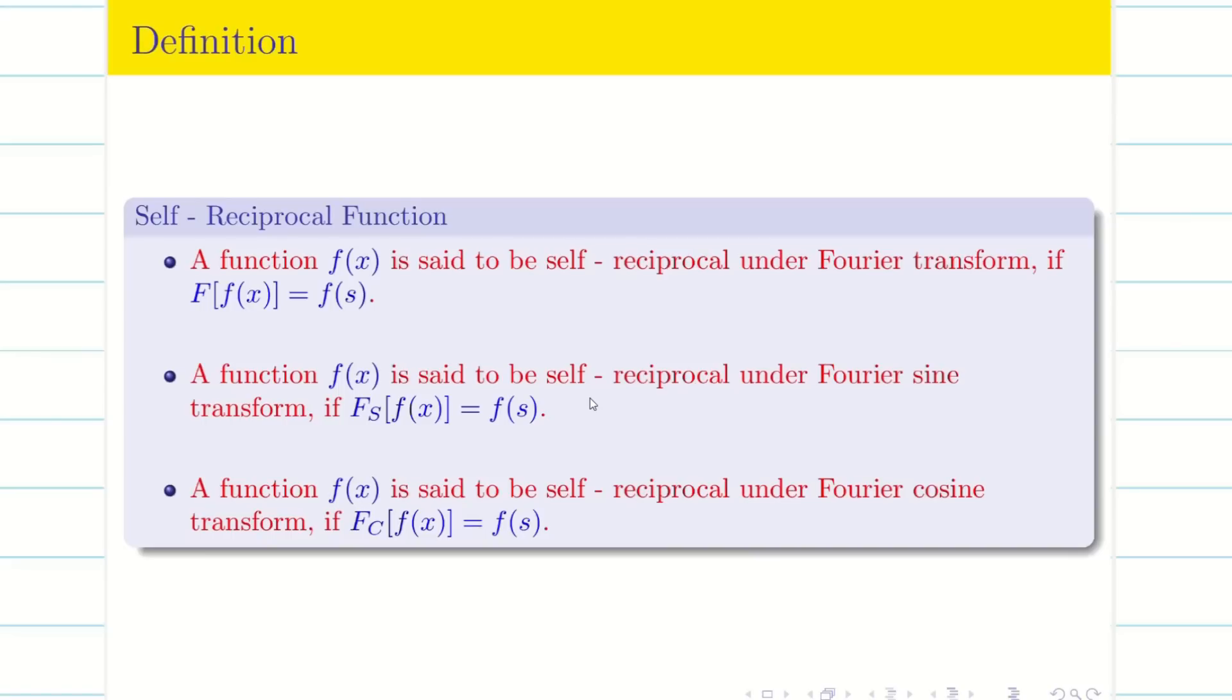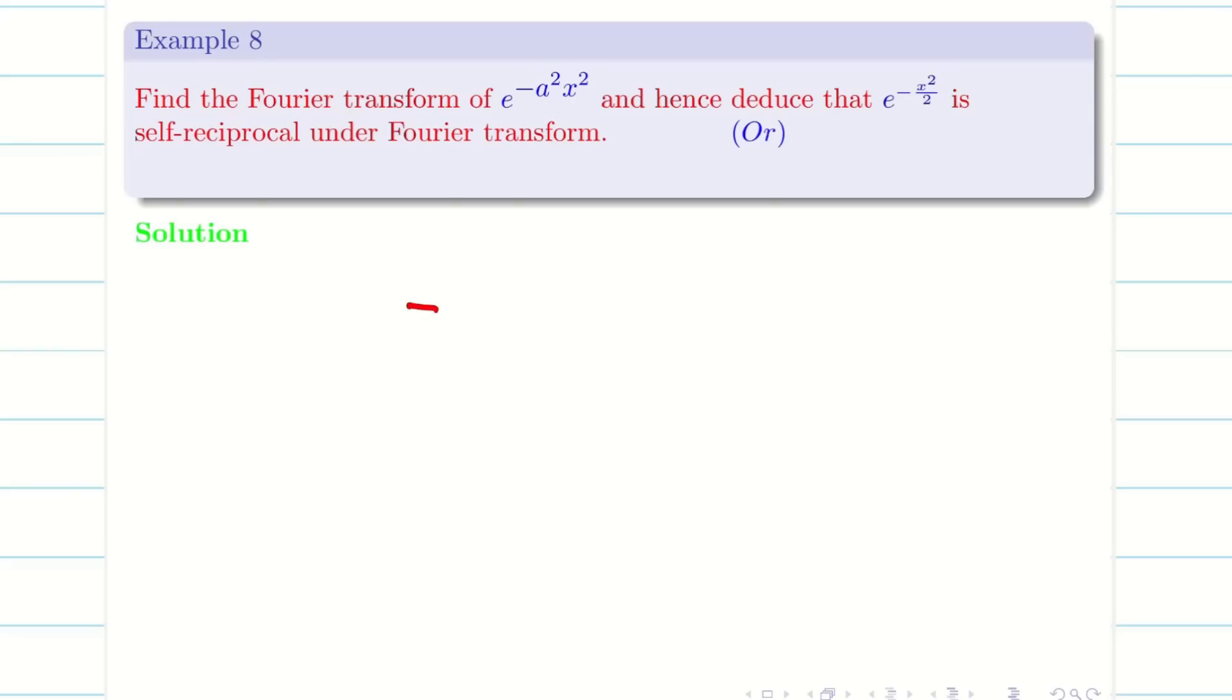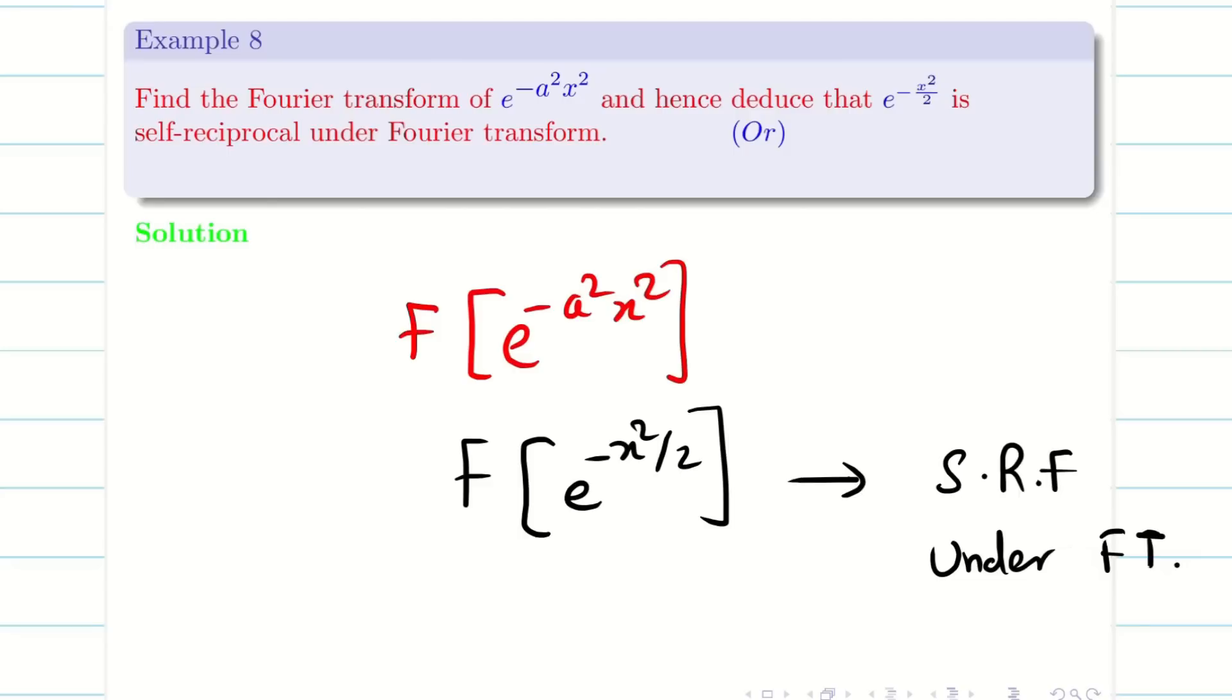So today we are going to see a very important problem. Find the Fourier transform of e to the minus a squared x squared, and hence find e to the minus x squared by 2 and prove this as a self-reciprocal function (SRF) under Fourier transform. This is our job.